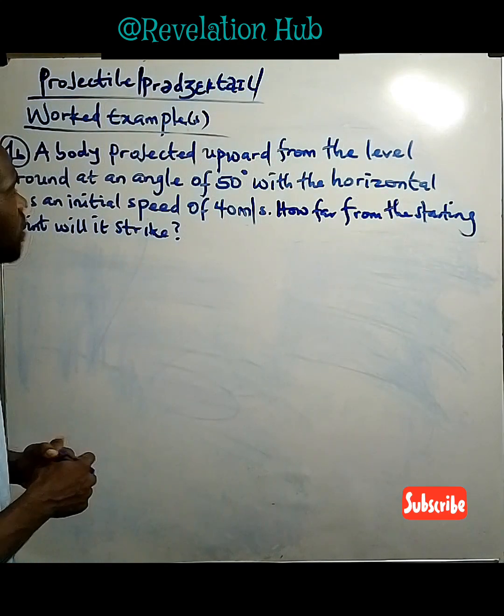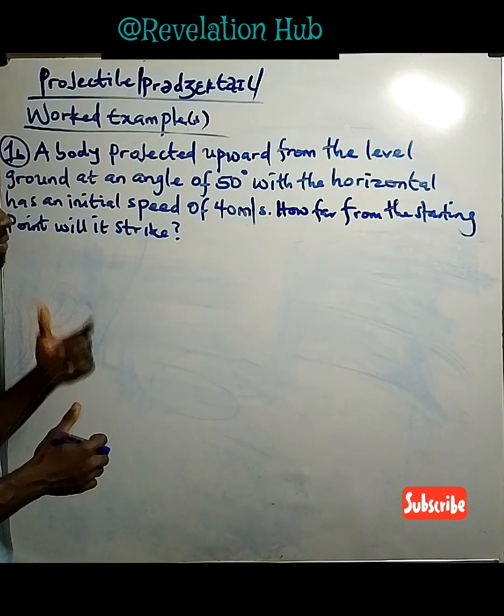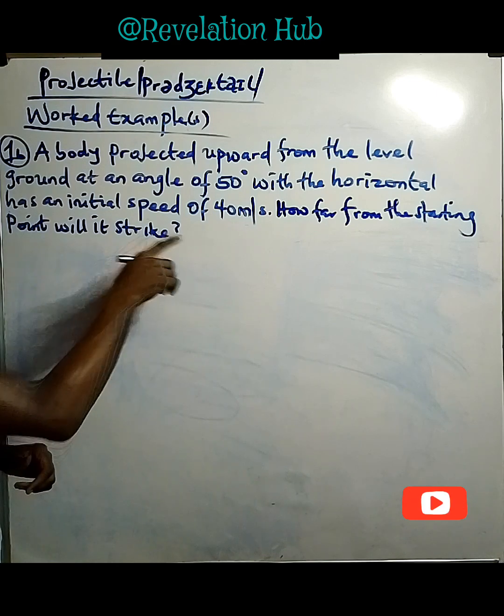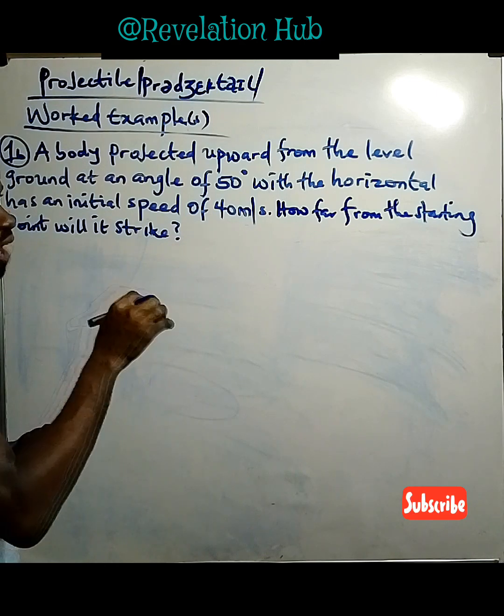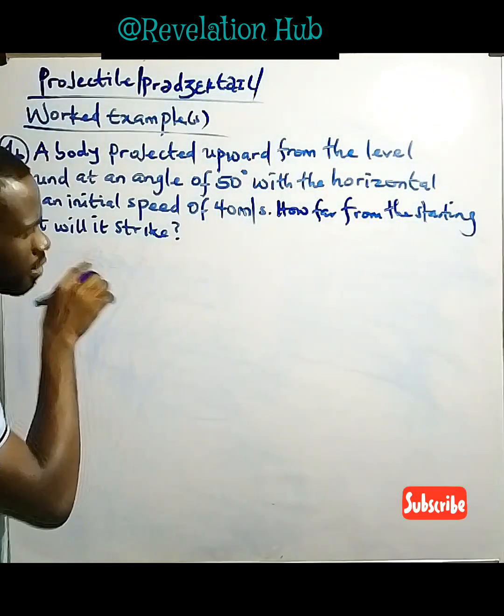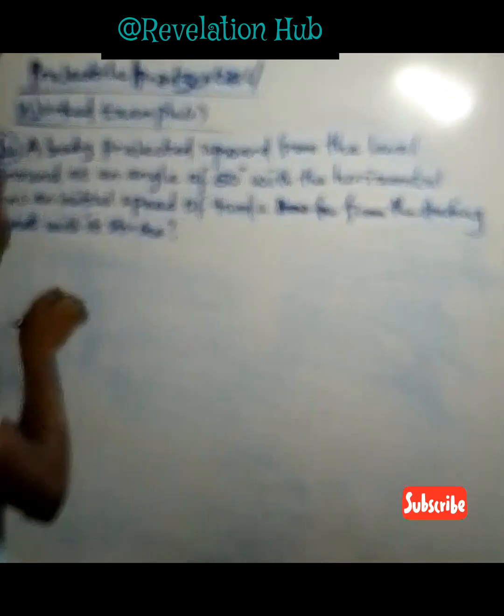A body projected upward from the level ground at an angle of 50 degrees with the horizontal has an initial speed of 40 meters per second. How far from the starting point will it strike?